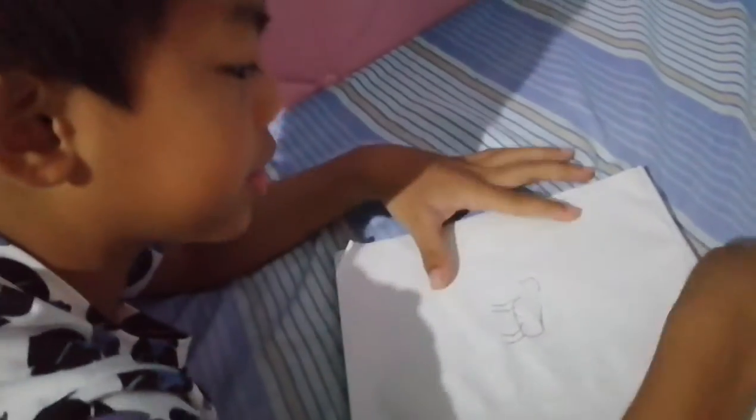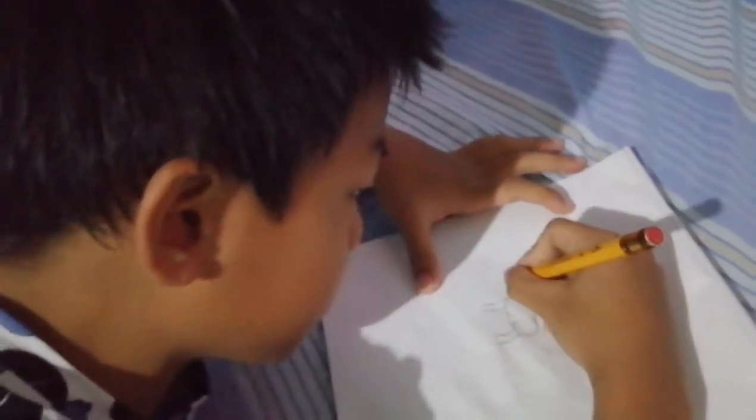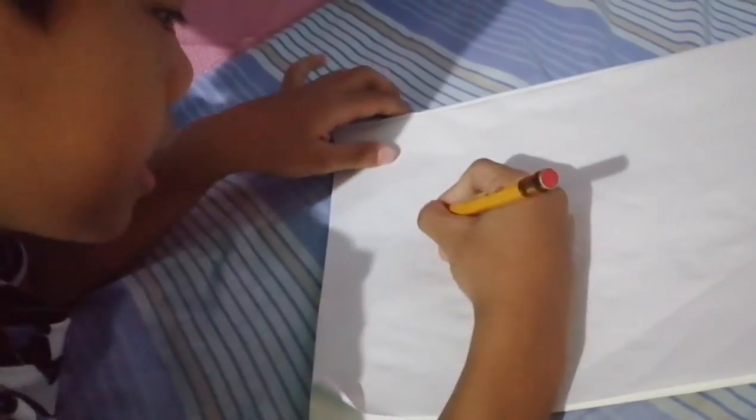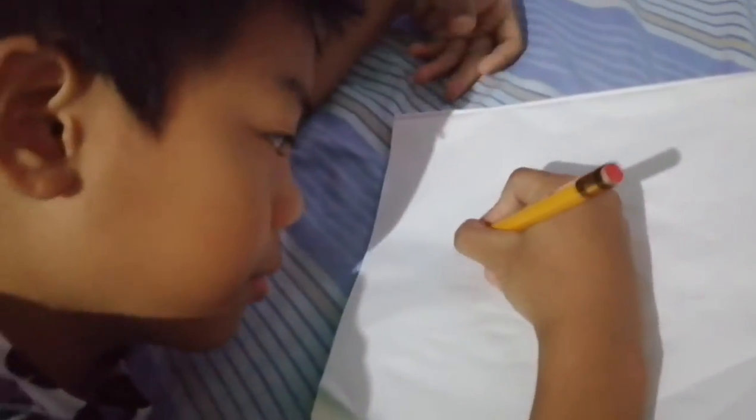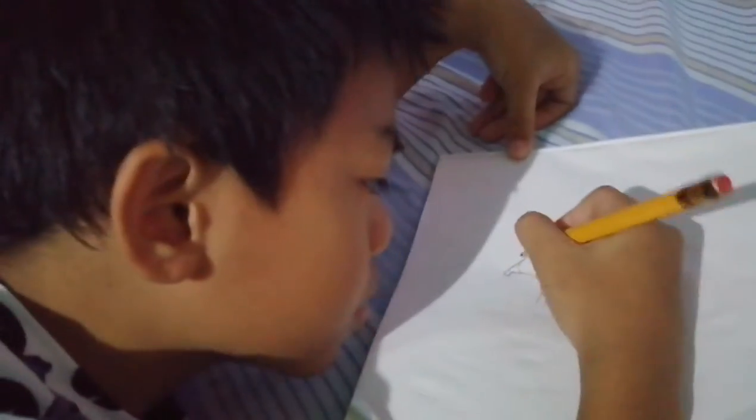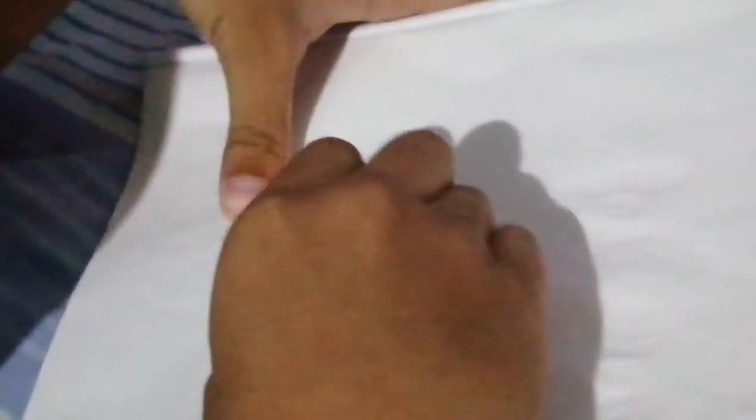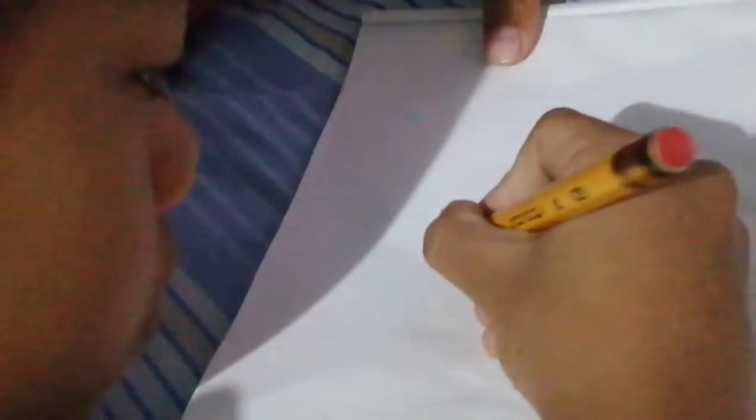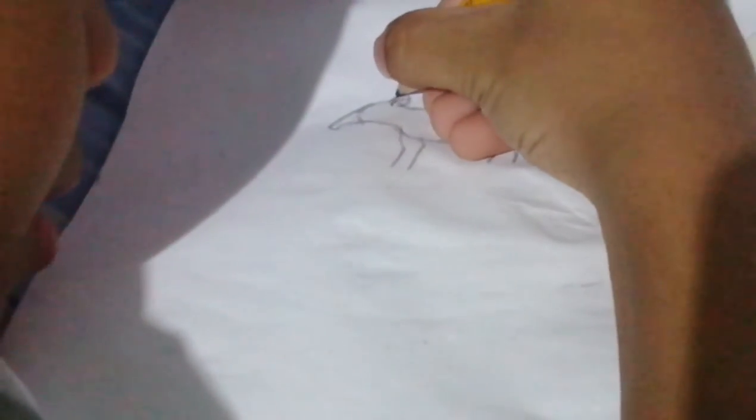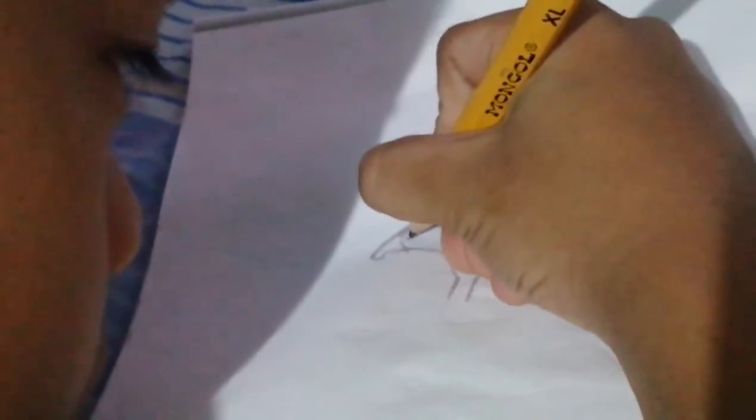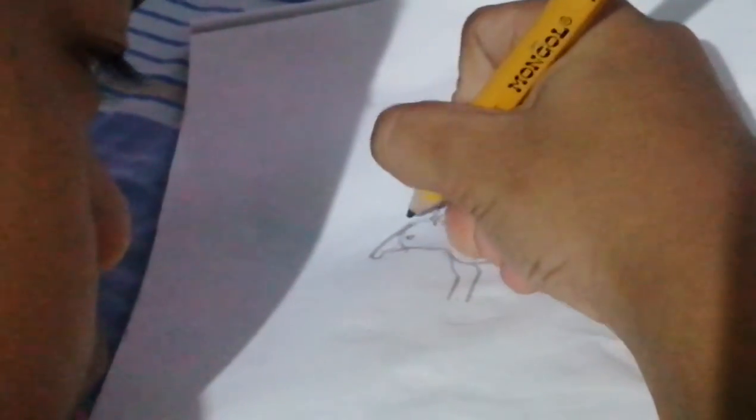Then you erase all the circles, and then we start with the snout. The ears. There's the eyes. There's the ears.